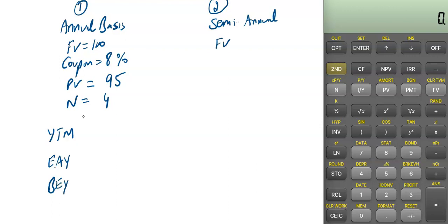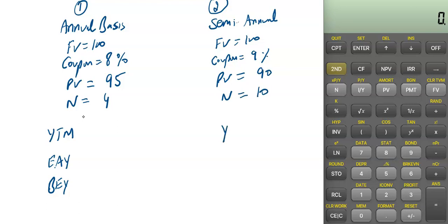For Bond 2, which is semi-annual: face value is 100, coupon is 9%, present value is 90, and N is 10. We need to calculate its YTM, effective annual yield, and bond equivalent yield as well.